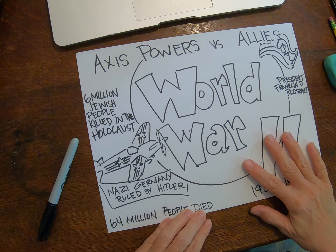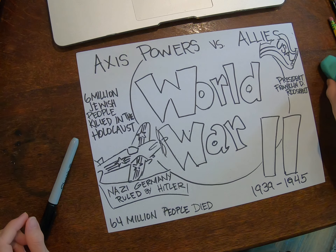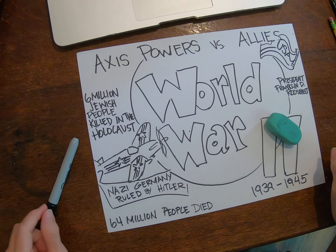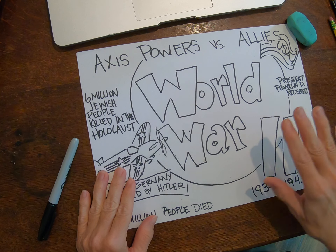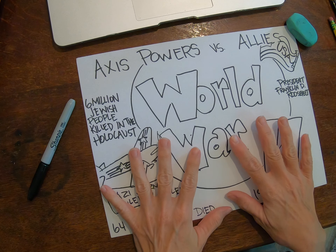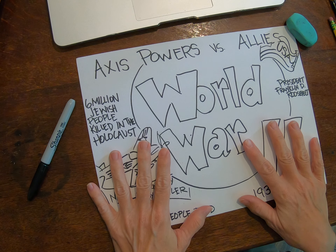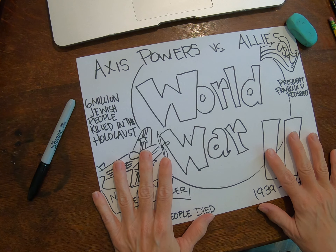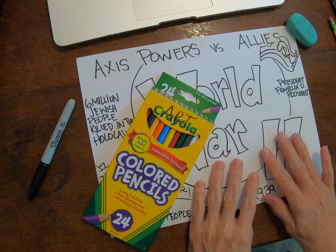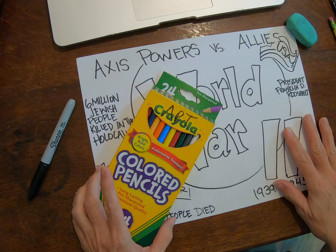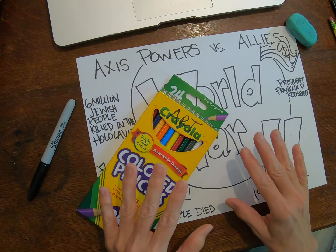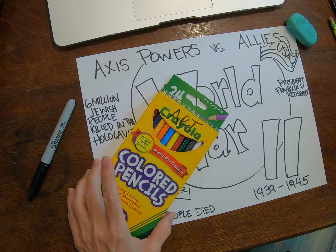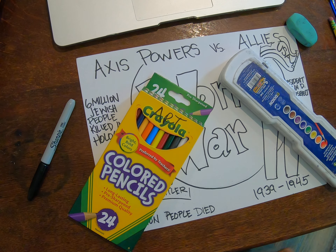Then you're going to outline everything with a Sharpie to make it show up well, then take your eraser and erase all the pencil lines. Once you have it drawn, outlined, and erased, you can choose how to add color. You can use colored pencils — you're going to do blending and make things nice and bright to really make it show up.